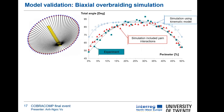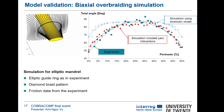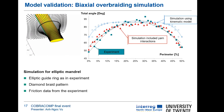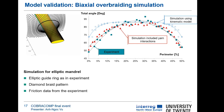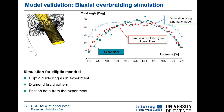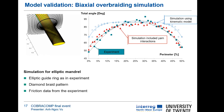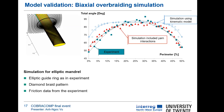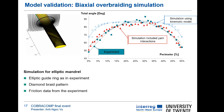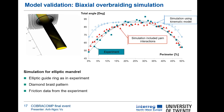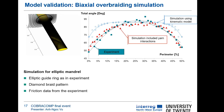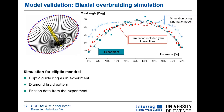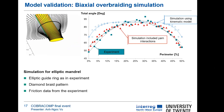With these results, we can validate the experimental data previously discussed. We use an elliptic mandrel with a diamond pattern and friction data from experiments. Here I plot again the total braid angle versus the perimeter of the cross-section. Compared to the kinematic model, we observe a very significant improvement with the new biaxial overbraiding model, especially at the edges of the mandrel — the simulated data matches very closely with the experimental data.